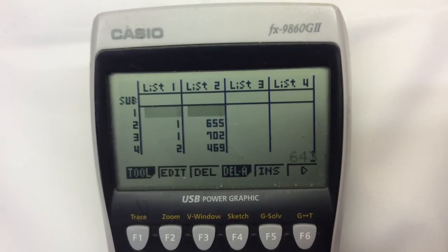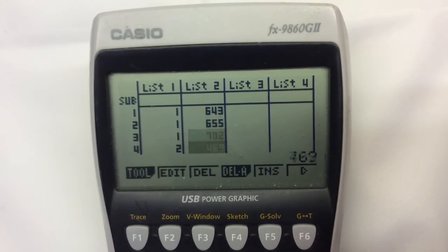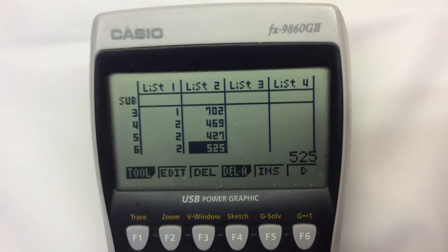So the calculator is going to understand that each of these first three pieces of data are coming from our first group, the next ones are coming from our second group, and the next ones from our third group.